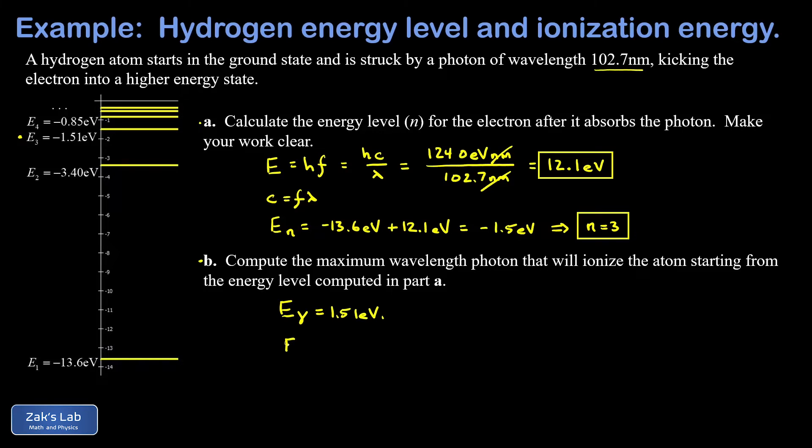And we play the same game. We'll set up E = hc/λ, and this time we're solving for the wavelength lambda. So lambda is hc over E. And hc, you can use 1240 or 1242 depending on how much precision you want. So 1240 eV·nanometers divided by the energy of our photon, 1.51 eV, gives an answer of 821 nanometers for the maximum wavelength of light that will ionize the atom starting from the n = 3 state.